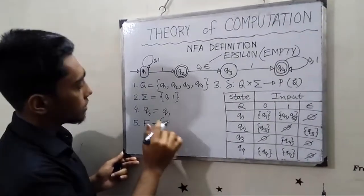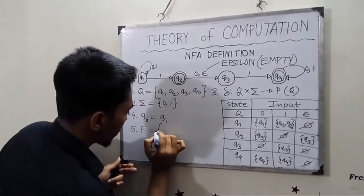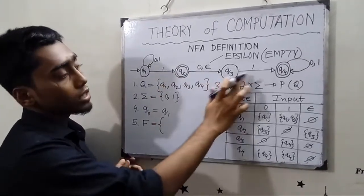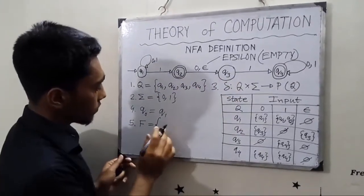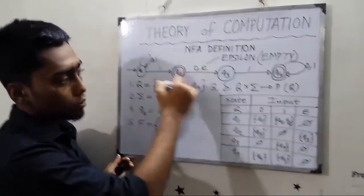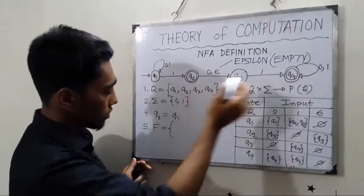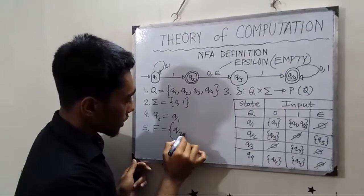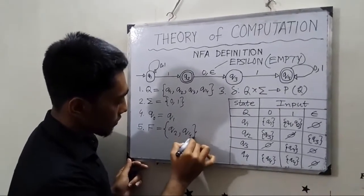The final states are Q2 and Q4. These states are shown with a double circle, indicating they are final states. So F equals the set containing Q2 and Q4.